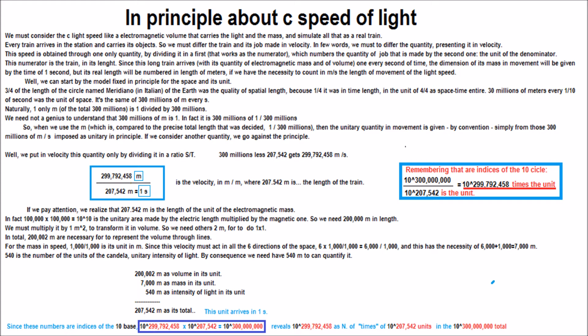Well, we put in velocity this quantity only by dividing it in a ratio st. 300,000,000 less 207,542 gets 299,792,458 m per second.